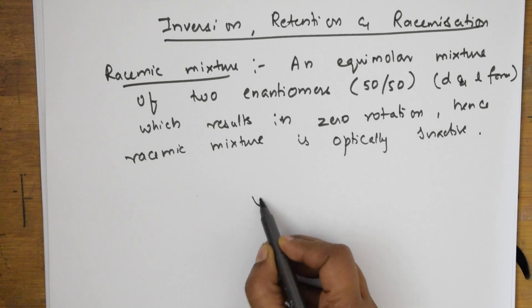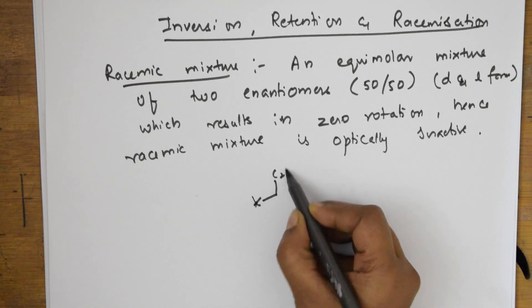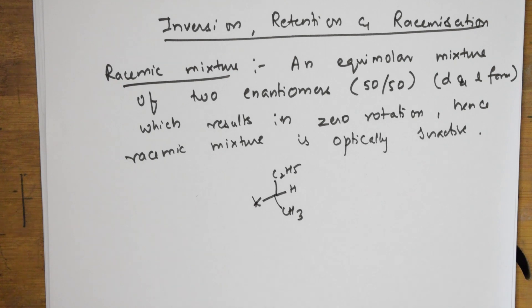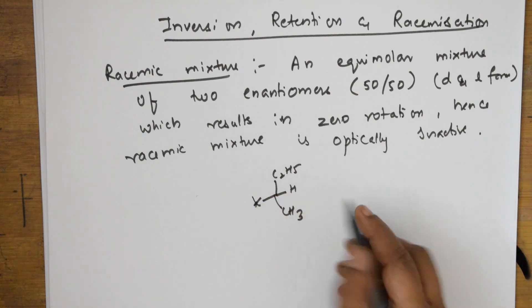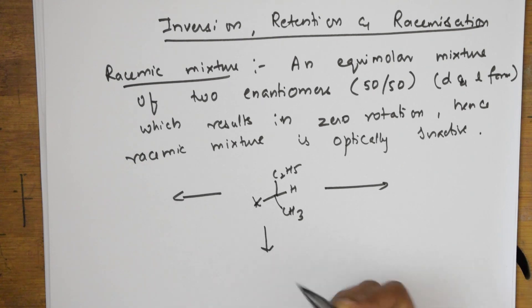I have picked up this example from your haloalkanes chapter. If I have a molecule like this, X, CH3, C2H5, H, this we have studied in your SN1 and SN2 mechanism.